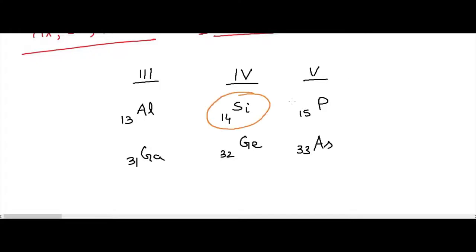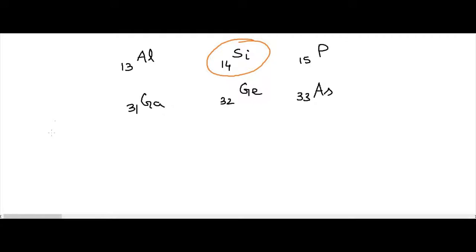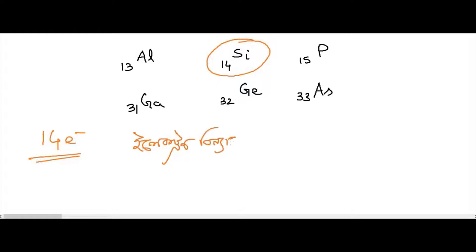This is the electron configuration. The electron configuration is as follows: electron is 0 — let's see — 1s2, 2s2, 2p6, 3s2, 3p2. So p is 0. This is 2, this is 4.